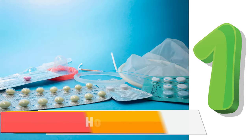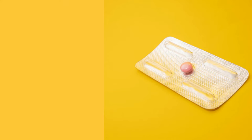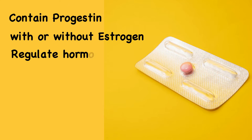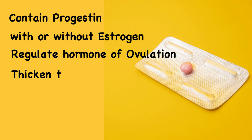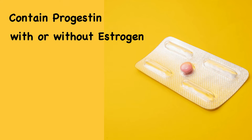The first type is hormonal contraceptives. Hormonal contraceptives contain progestin with or without estrogen. They work by regulating the hormones involved in ovulation, and they also help by thickening cervical mucosa, which makes it difficult for the sperm to reach the egg. The estrogen enhances contraceptive effectiveness.